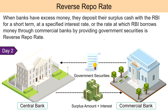Let's understand it with an example. Suppose ABC Limited is a commercial bank. It deposits its surplus funds worth Rs. 1 crore with RBI at 3.35% per annum reverse repo rate. On the first day, the bank transfers Rs. 1 crore to RBI against government securities as collateral. On the next day, RBI repays the amount along with interest at the rate of 3.35% per annum, which amounts to Rs. 918, and the commercial bank transfers the government securities back to RBI.